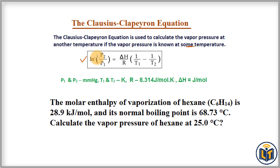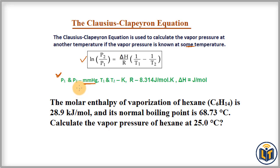The Clausius-Clapeyron equation is: ln(P2/P1) = (ΔH/R) × (1/T1 − 1/T2). Here, P1 is the initial vapor pressure and P2 is the final vapor pressure. ΔH is the molar enthalpy of vaporization, R is the gas constant (8.314 J/mol·K), T1 is the initial temperature, T2 is the final temperature, pressures are in mmHg or Torr, temperatures in Kelvin, and ΔH in joules per mole.